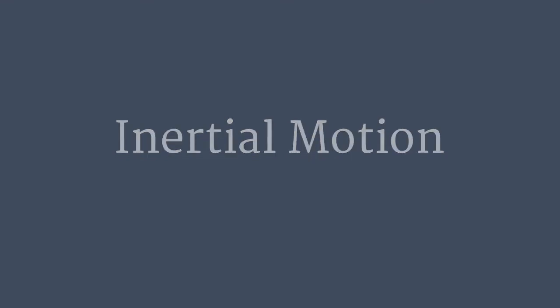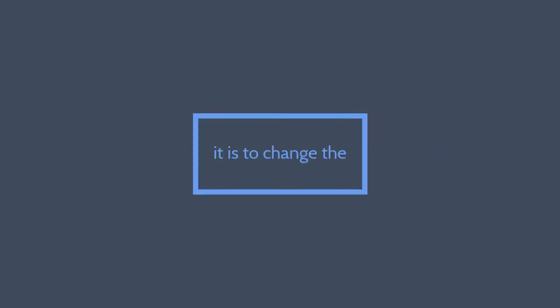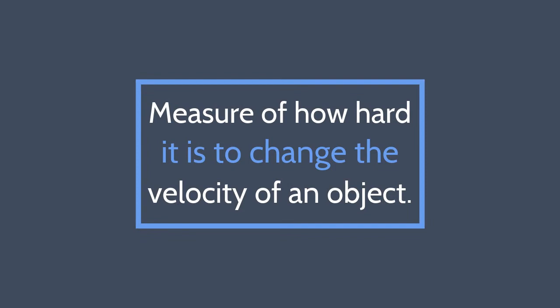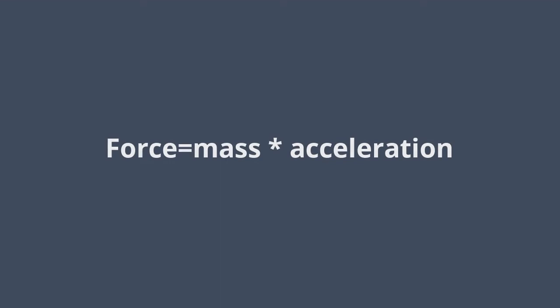Time for some extra vocab. Inertial mass is the measure of how hard it is to change the velocity of an object. The more inertial mass an object has, the more force is required.